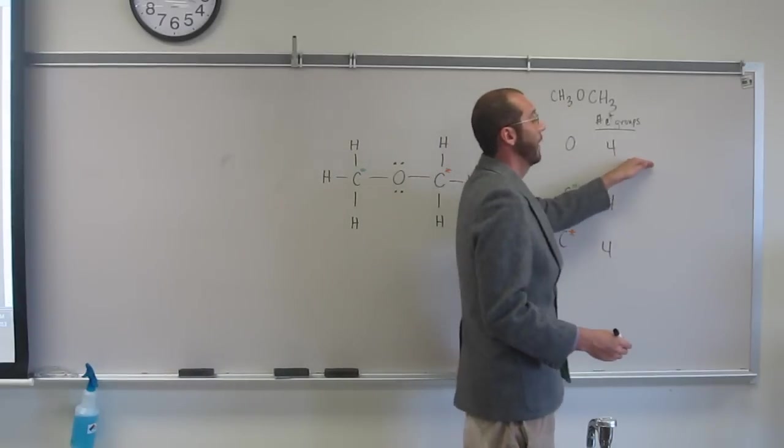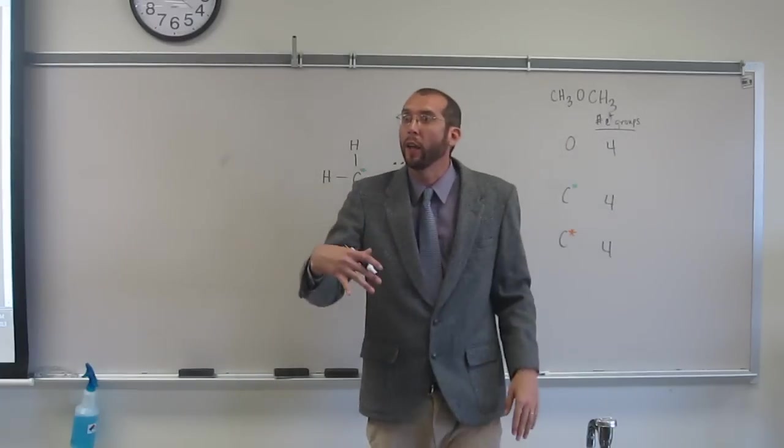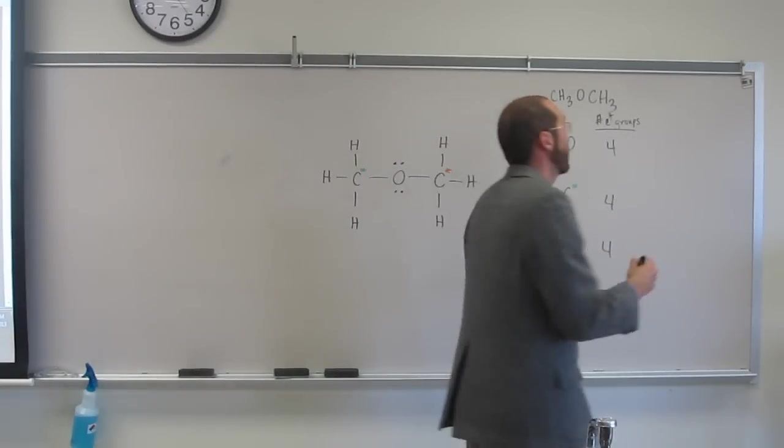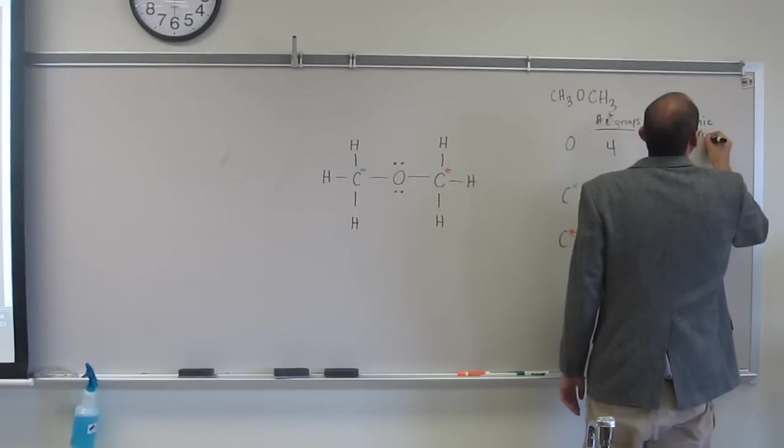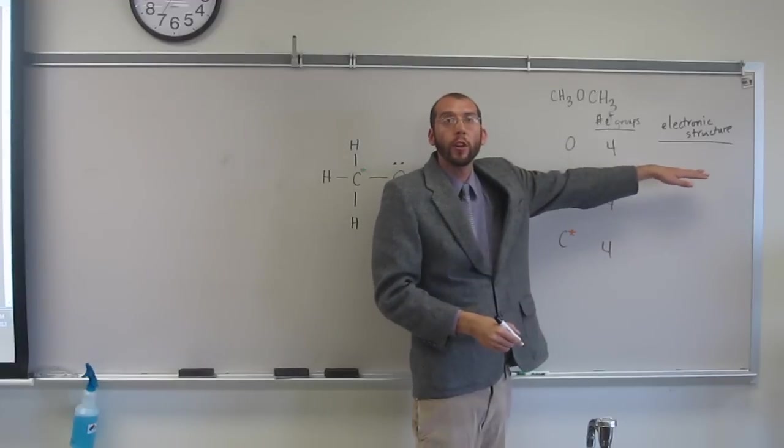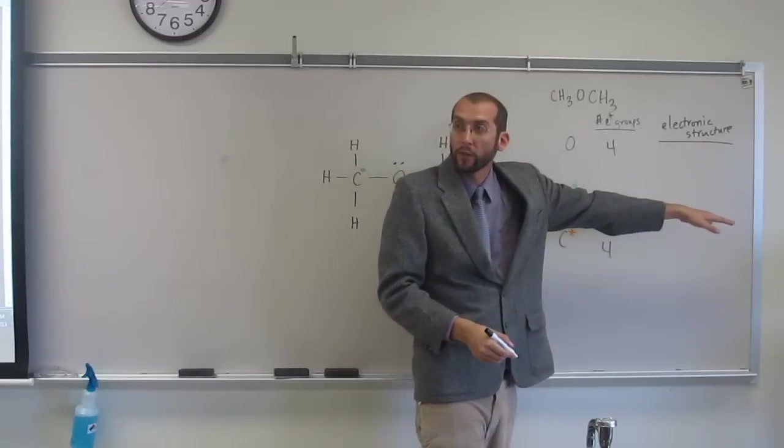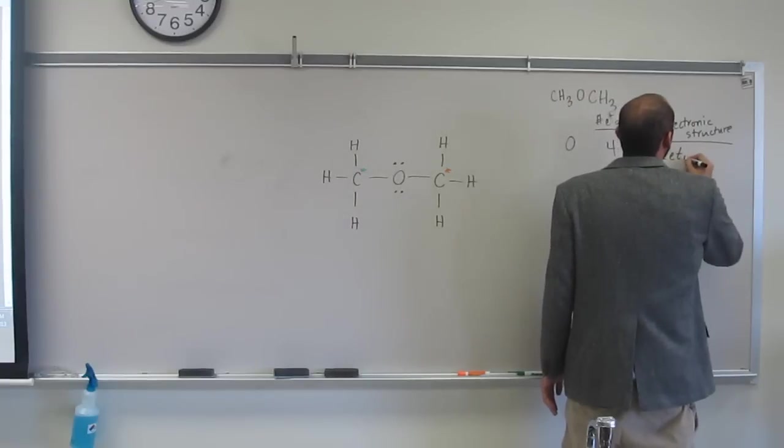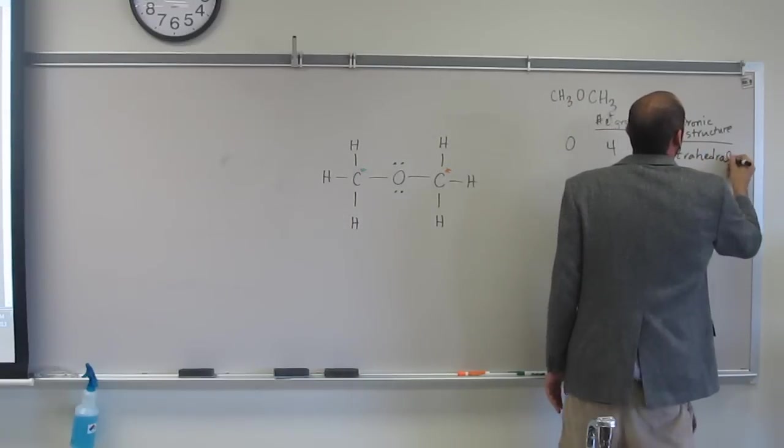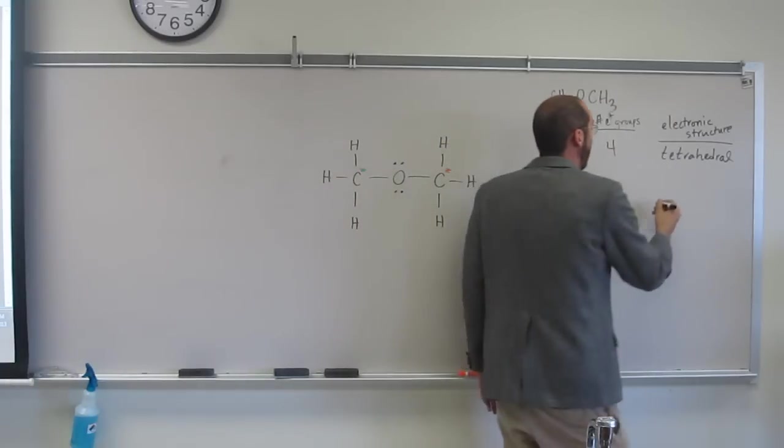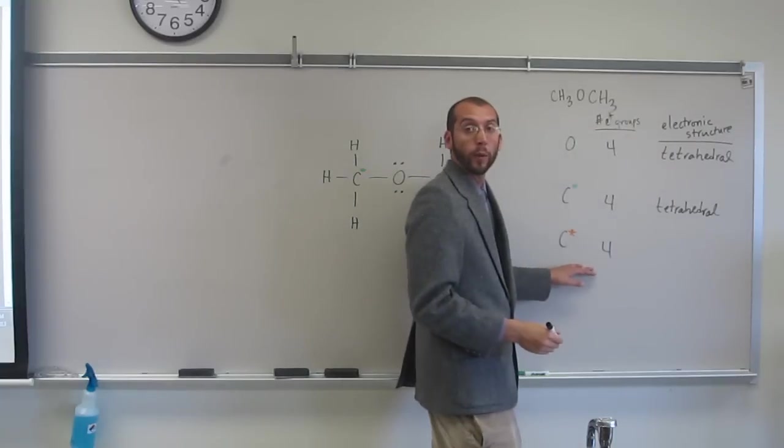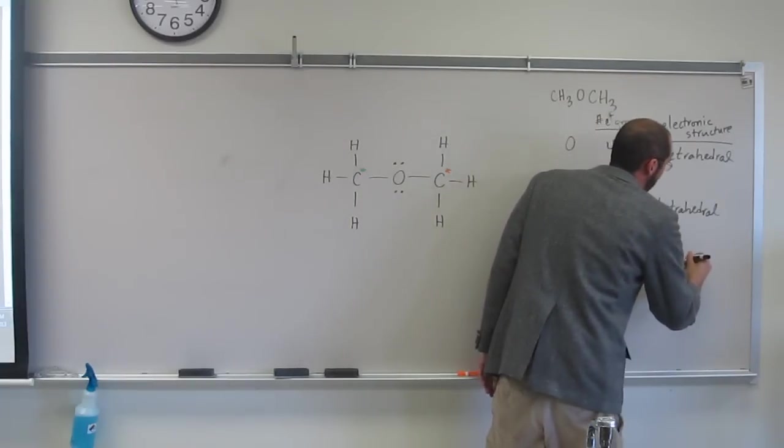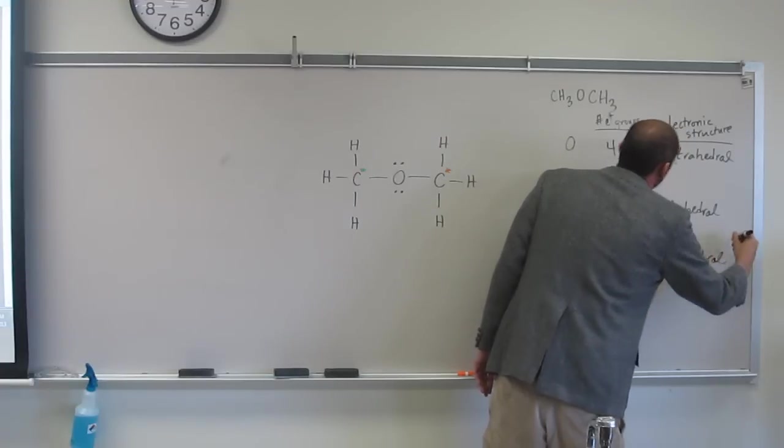So that should give us an idea or tell us what the electronic structure of these things is, right? So the electronic structure of these is going to be what? What's the electronic structure around that central oxygen? Tetrahedral. Tetrahedral. Why? Because it's got four. What about the green carbon? Tetrahedral as well. And what about the orange one? Tetrahedral.